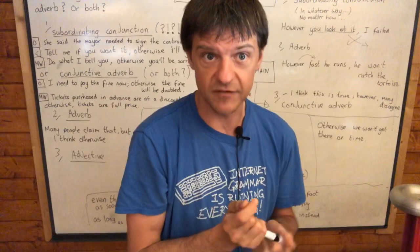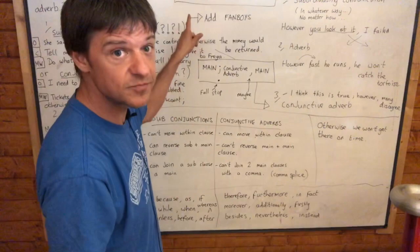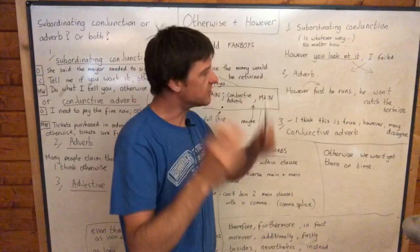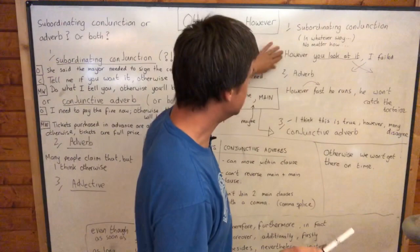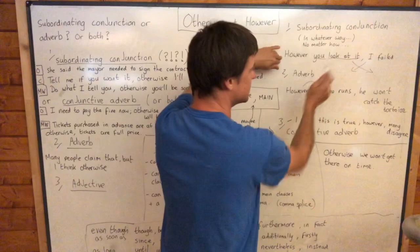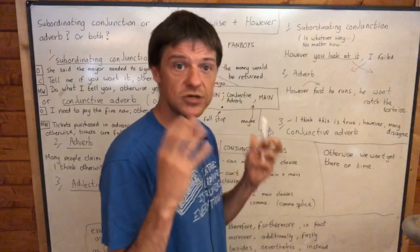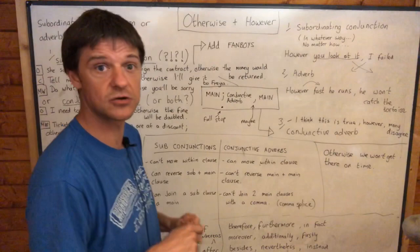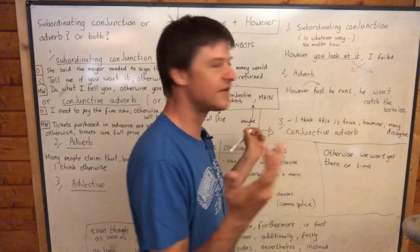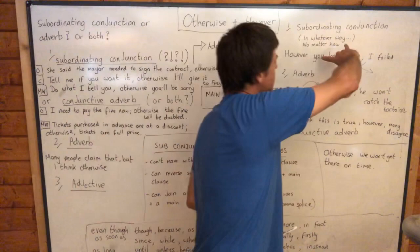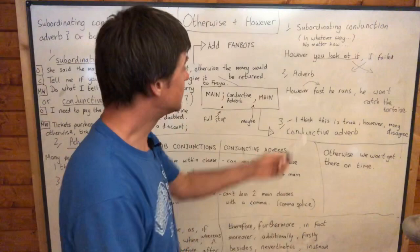Now I want to show you some confusing words: 'otherwise' and 'however.' However is particularly confusing because it can function as a subordinating conjunction. For example: 'however you look at it' — that's a clause with a subject and verb. 'However you look at it, I failed.' We can prove it's a subordinating conjunction: you can't move 'however' within the clause — you can't say 'you however look at it' or 'you look however at it.' But you can swap the two clauses: 'I failed, however you look at it.' It passes all the tests for being a subordinating conjunction.